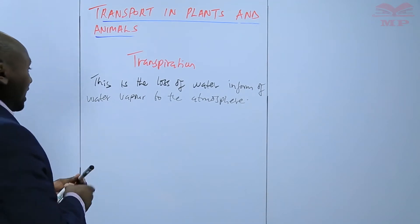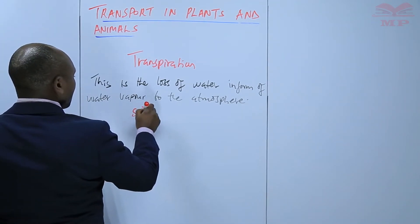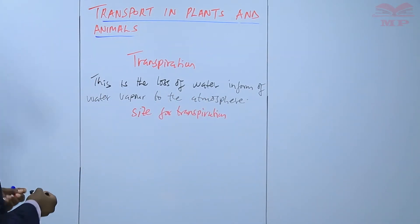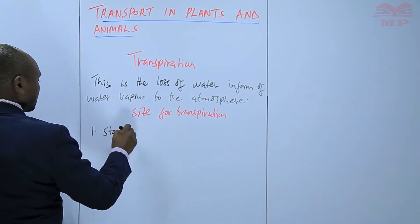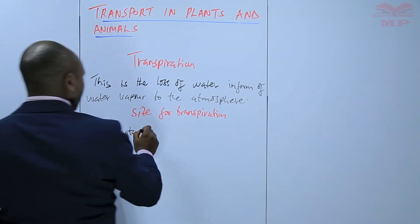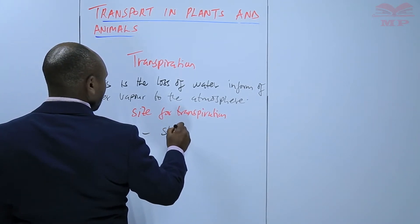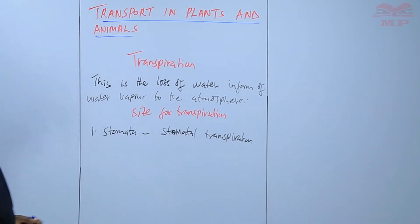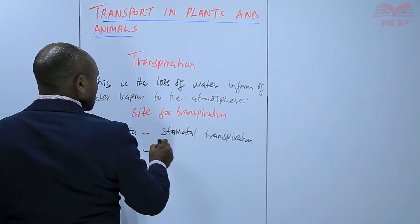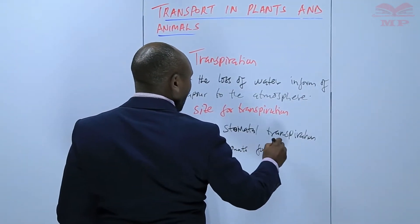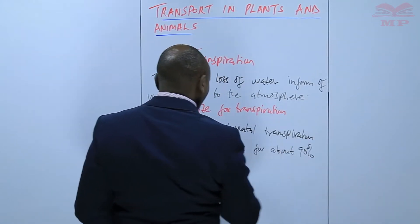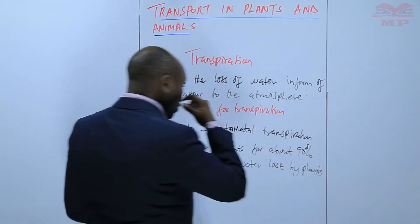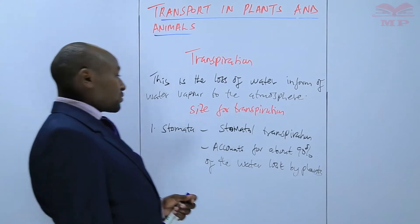Then we will have the sites for transpiration. The first site is stomatal transpiration, and this accounts for about 90% of the water lost by plants. So the majority of the water that is lost by plants is lost through the stomata, and we know that stomata are found in the leaves.